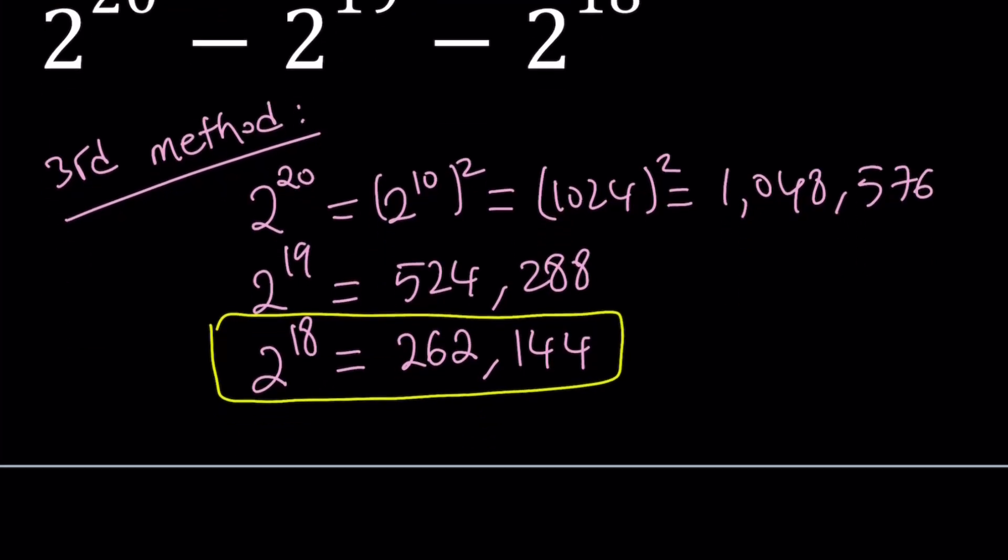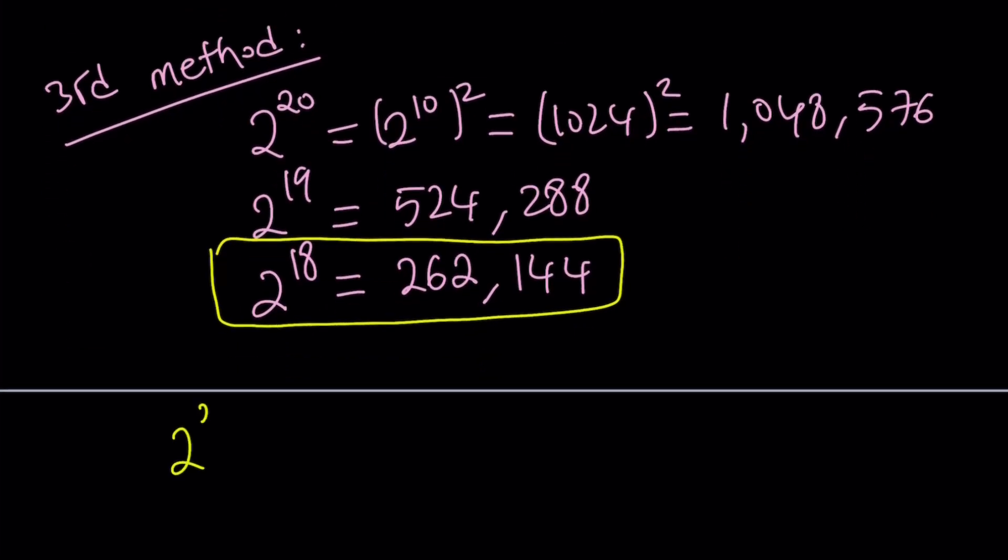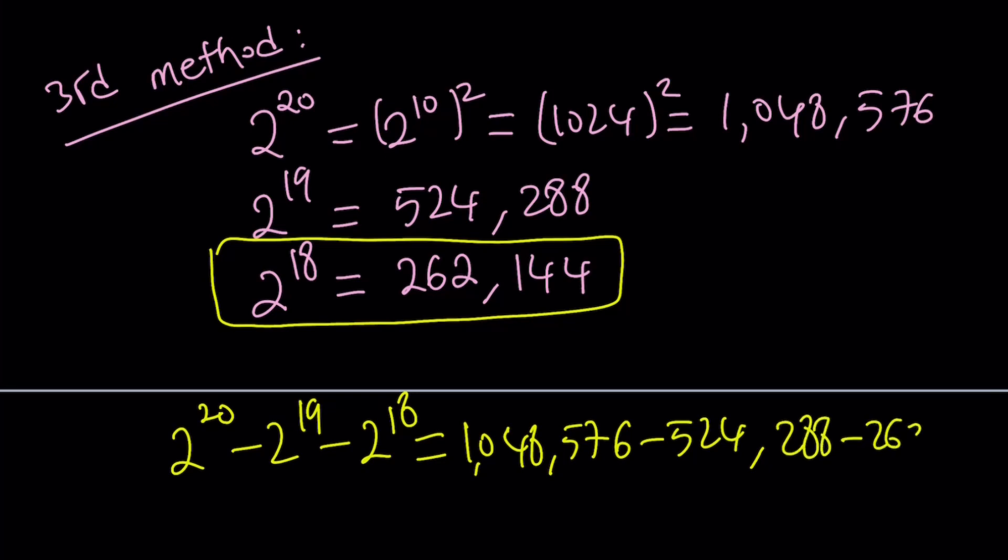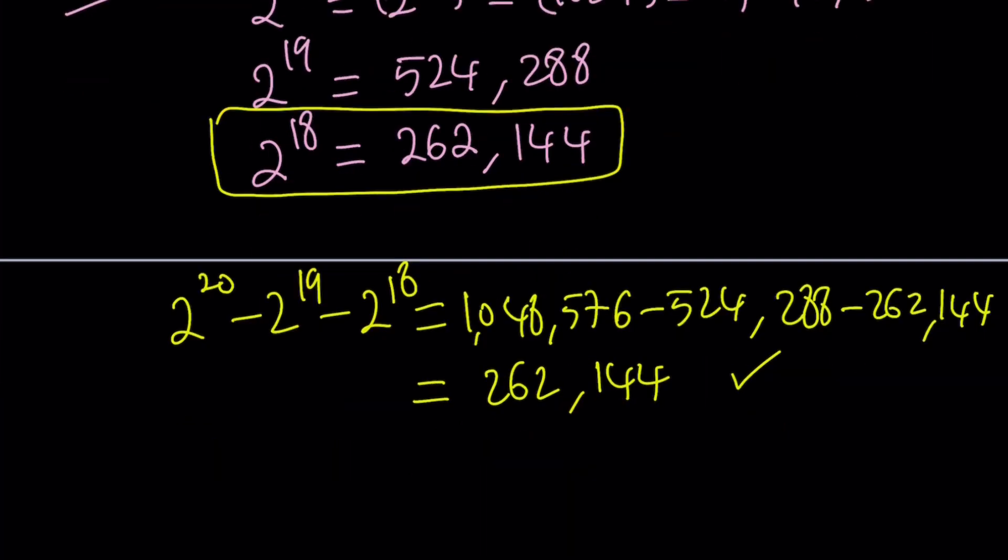And then what do we do? We subtract 2 to the power 20 minus 2 to the power 19 minus 2 to the power 18, which is 1,048,576 minus 524,288 minus 262,144. And the result is going to be 262,144. That's why I told you that is such a special number.